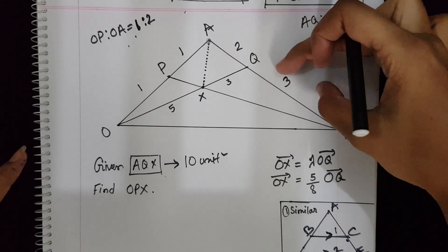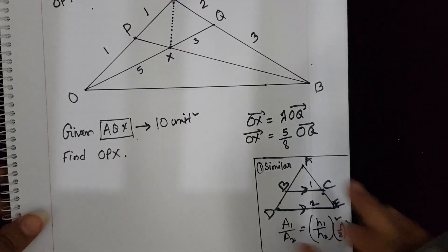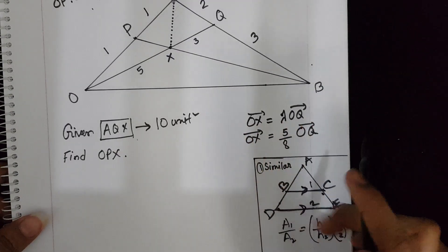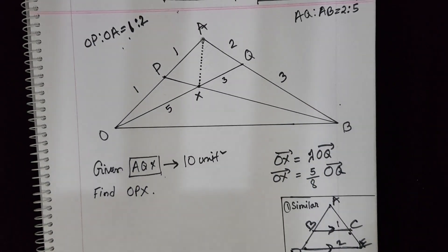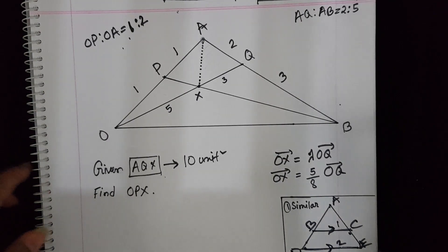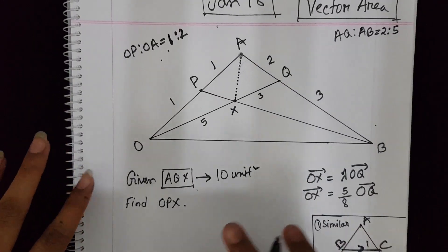Similarly, these ratios are given and OX equals Lambda OQ, that is 5 by 8. We got these values from the upper portion ABCD, that part. So I am just solving the portion of the area.